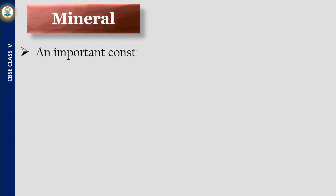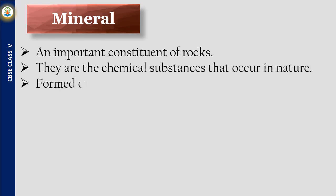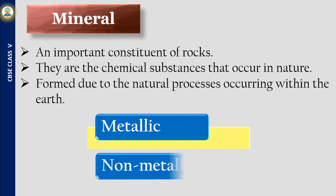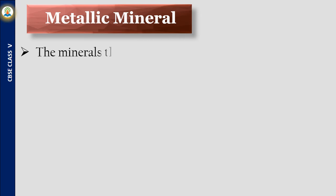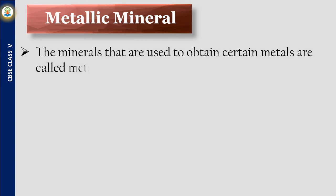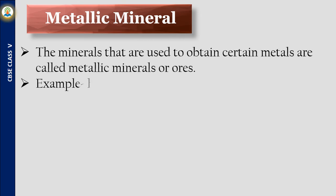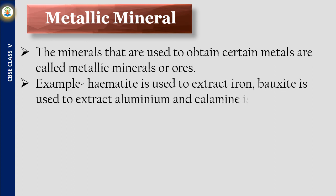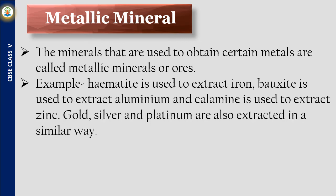Minerals are an important constituent of rocks. They are chemical substances that occur in nature, formed due to natural processes occurring within the earth. Minerals are classified into two broad categories: metallic minerals and non-metallic minerals. Metallic minerals are used to obtain certain metals — for example, hematite is used to extract iron, bauxite is used to extract aluminum, and calamine is used to extract zinc. Gold, silver, and platinum are also extracted in a similar way.